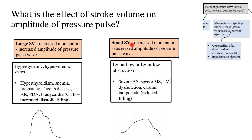When there is a small stroke volume, momentum decreases and that contributes to a decreased amplitude of the pressure pulse wave. This is seen in conditions with LV outflow or LV inflow obstruction — for example, severe aortic stenosis, severe mitral stenosis — in conditions of LV dysfunction where contractility is depressed, and in cardiac tamponade where reduced filling of the left ventricle throughout diastole results in less volume available for ejection in the subsequent systole. An example pressure pulse tracing in severe aortic stenosis shows reduced amplitude with a slow rise and a late peak.